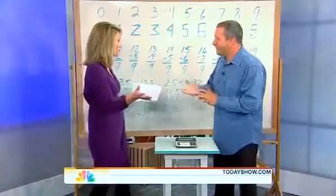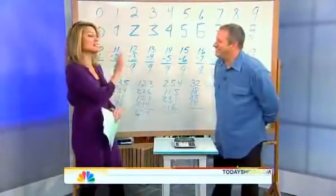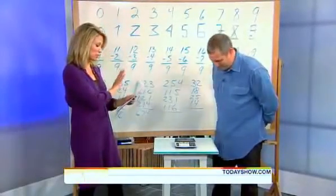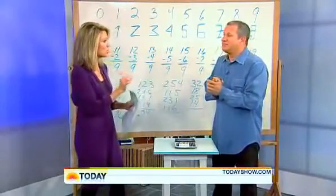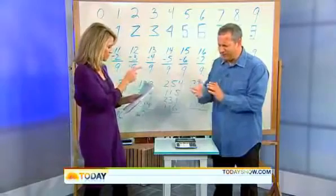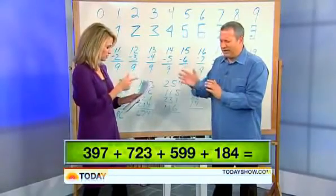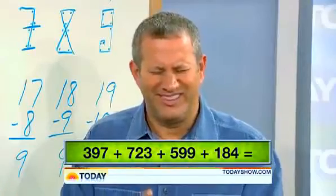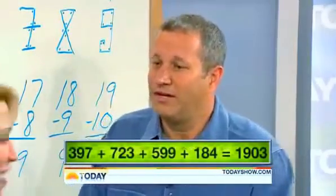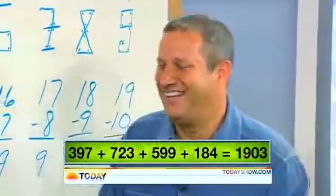Well, to prove that point we have a few equations for you. You have not seen any of these equations beforehand, we should point out. Let's see if you can figure them out. We're going to ask you to add four three-digit numbers together: 397 plus 723 plus 599 plus 184. 1903. Oh! Yes it is.